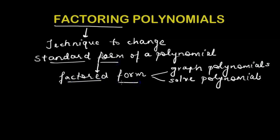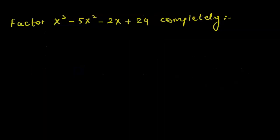Therefore, the best way is to change the standard form of a polynomial to factored form and do whatever is required. If the question wants us to graph the polynomial, we use the factored form to graph it; if it wants us to solve it, we use the factored form to solve it. In this lesson we would cover how to change the standard form to factored form — a process called factoring.